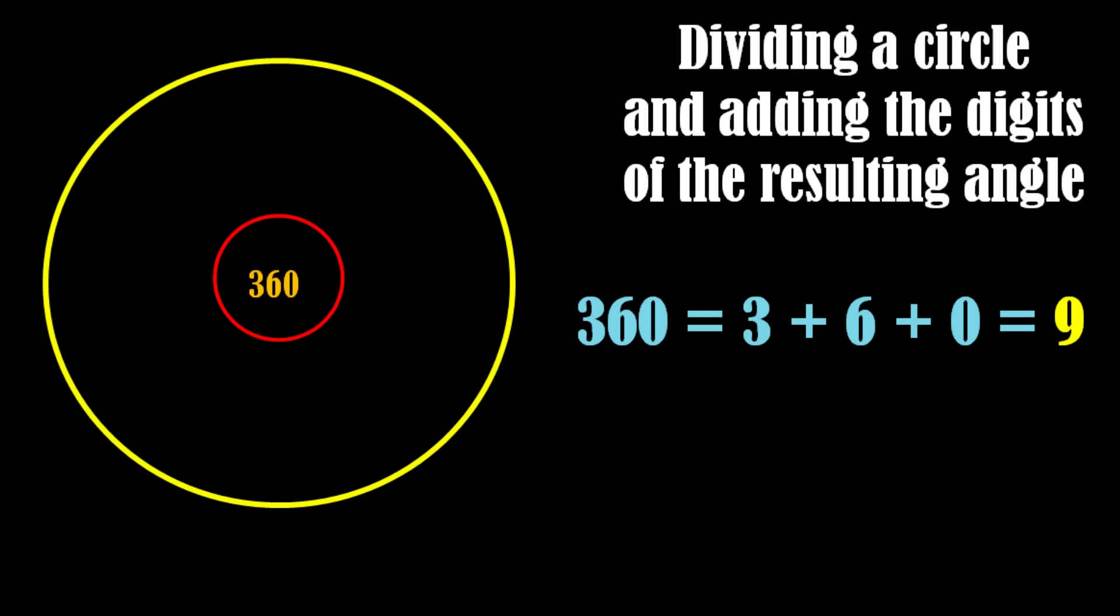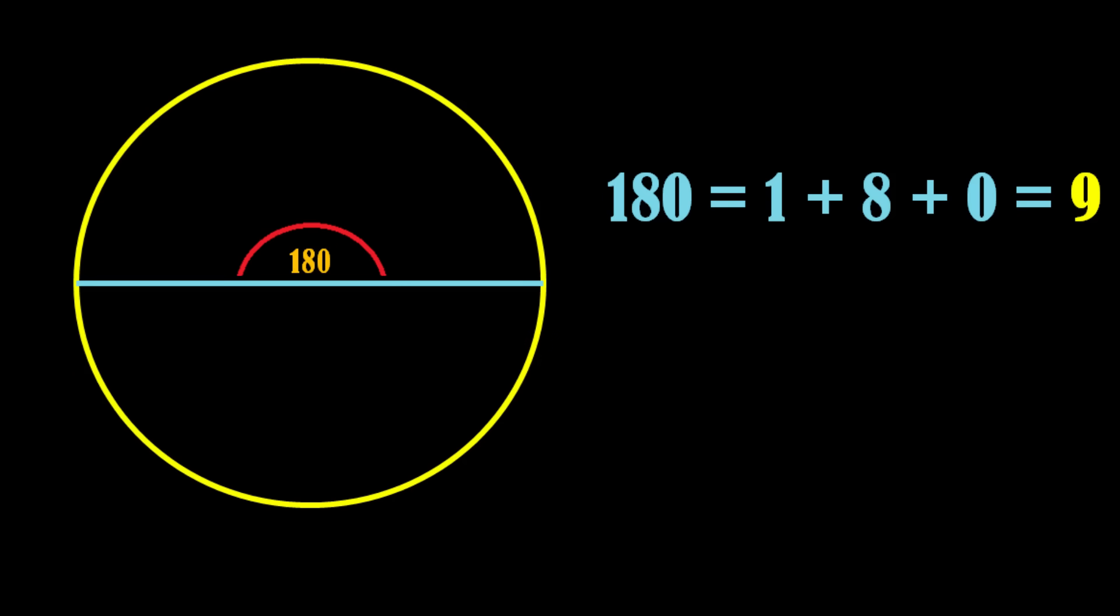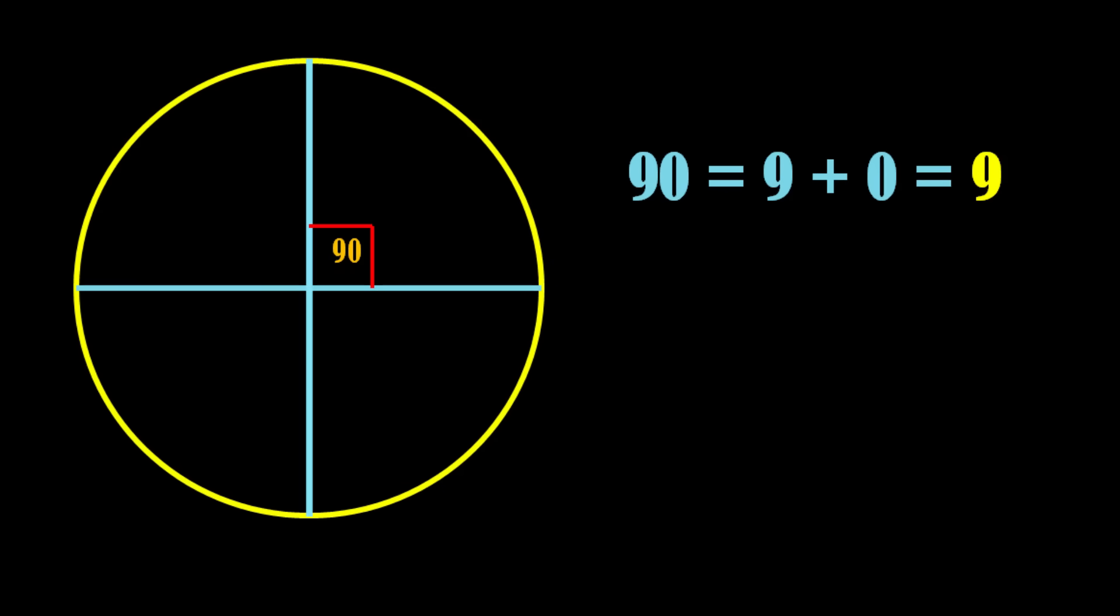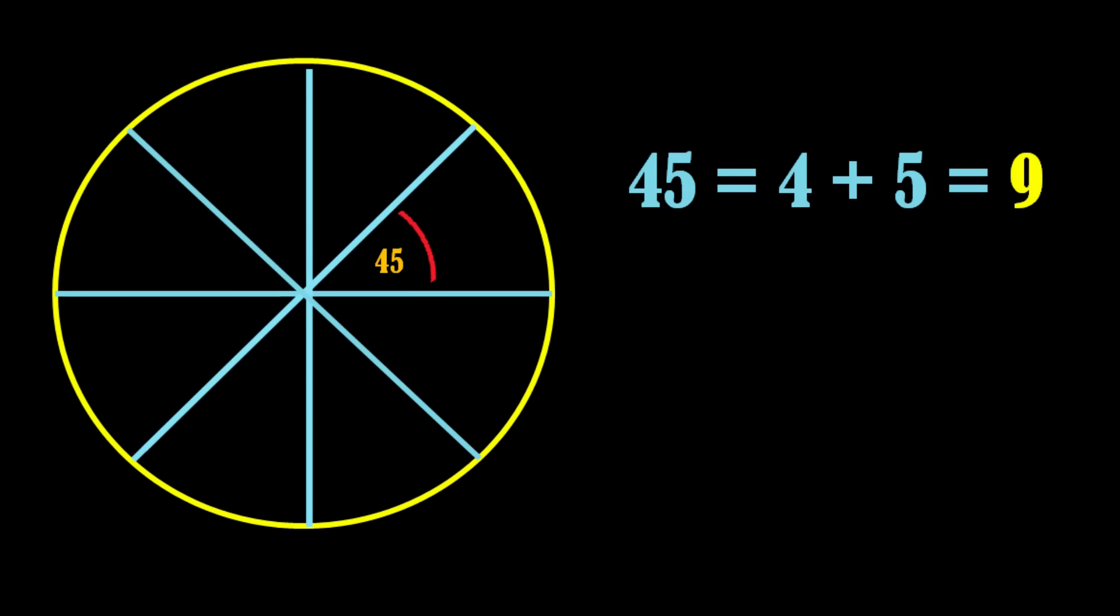But what will happen if we keep on dividing the circle in half infinitely? The results that you will get will definitely boggle your mind. A semicircle makes an angle of 180 degrees at the center which again adds up to 9. Now again divide the circle in half and we have an angle of 90 degrees. Find the digital root of the number. It's 9 again.